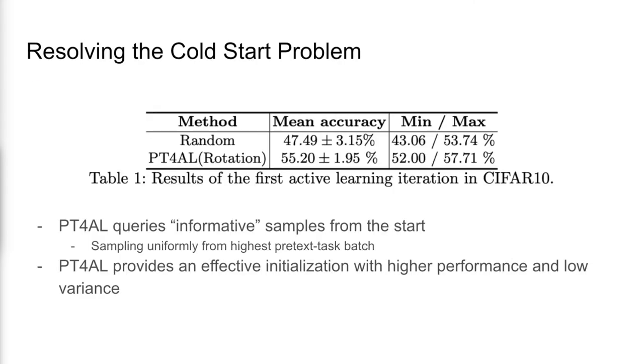Since PT4AL uses the pretext task loss to sample from the first iteration, it queries informative samples from the start and thus resolves the cold start problem. PT4AL provides an effective initialization with higher performance and low variance compared to random sampling.